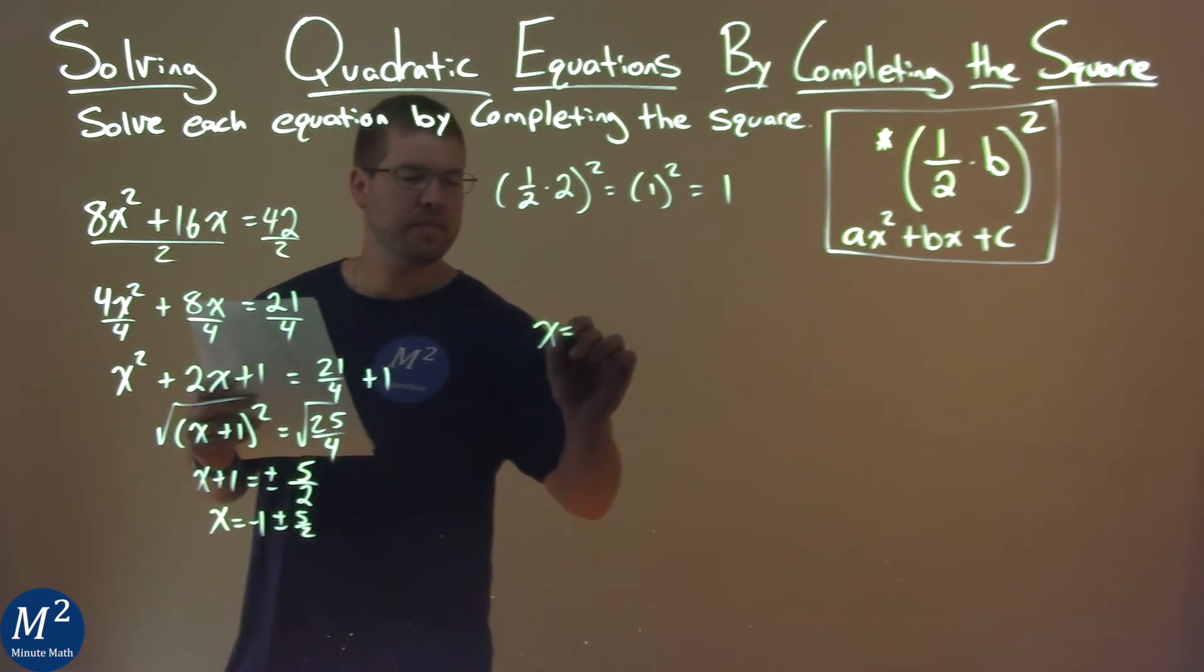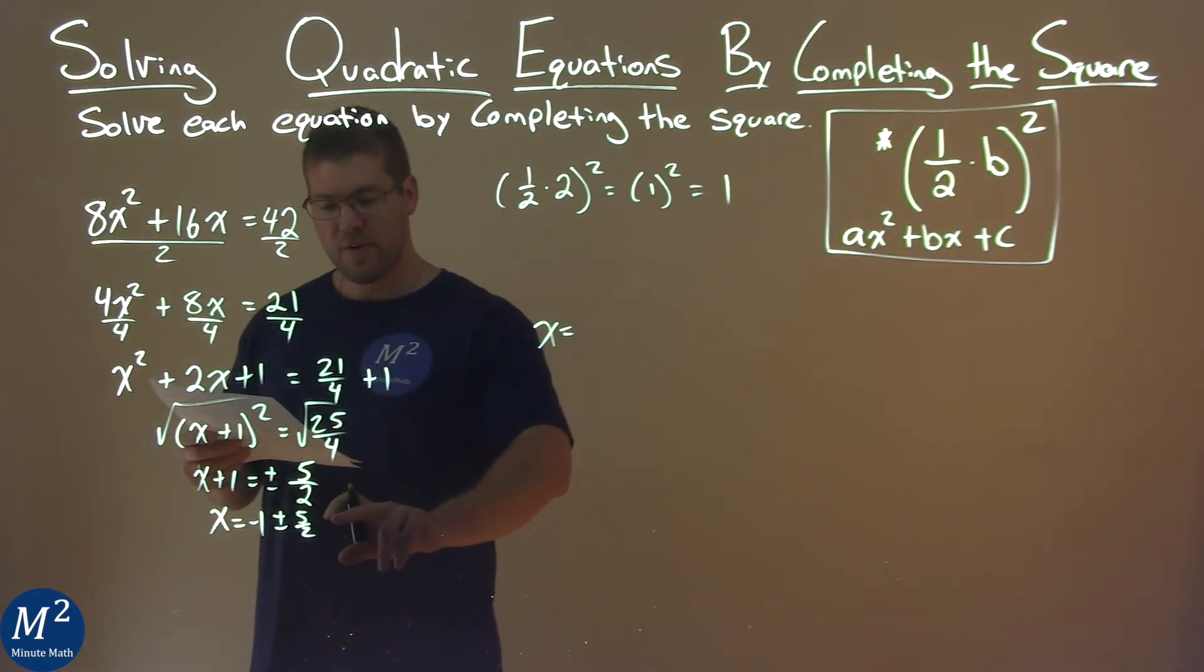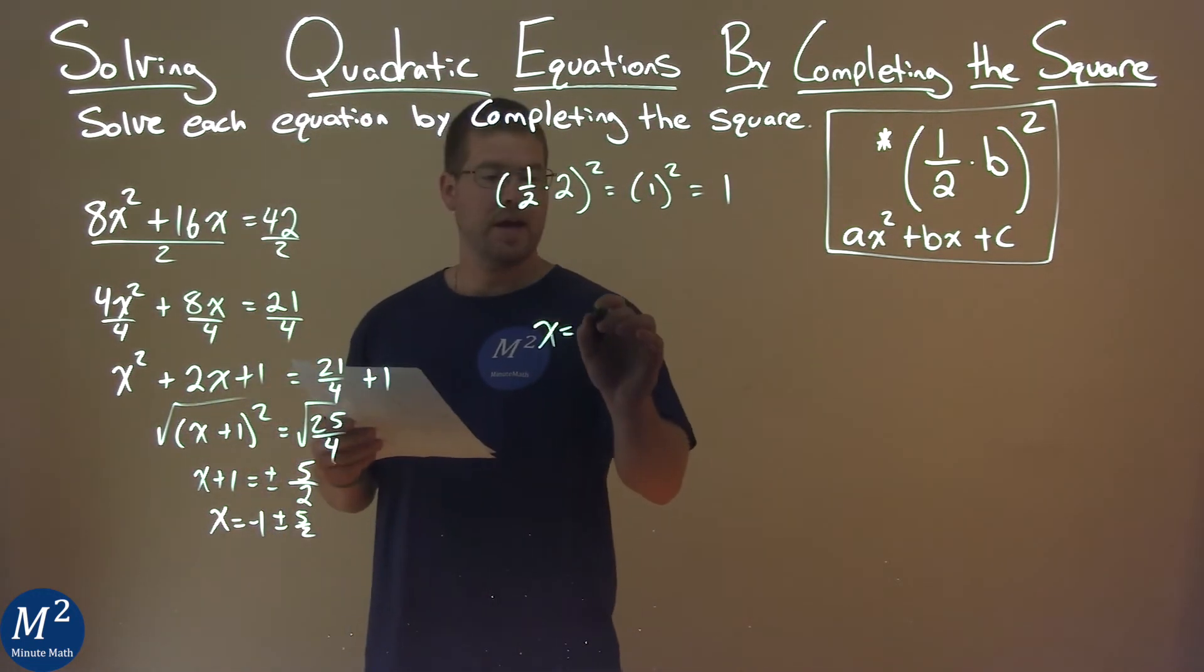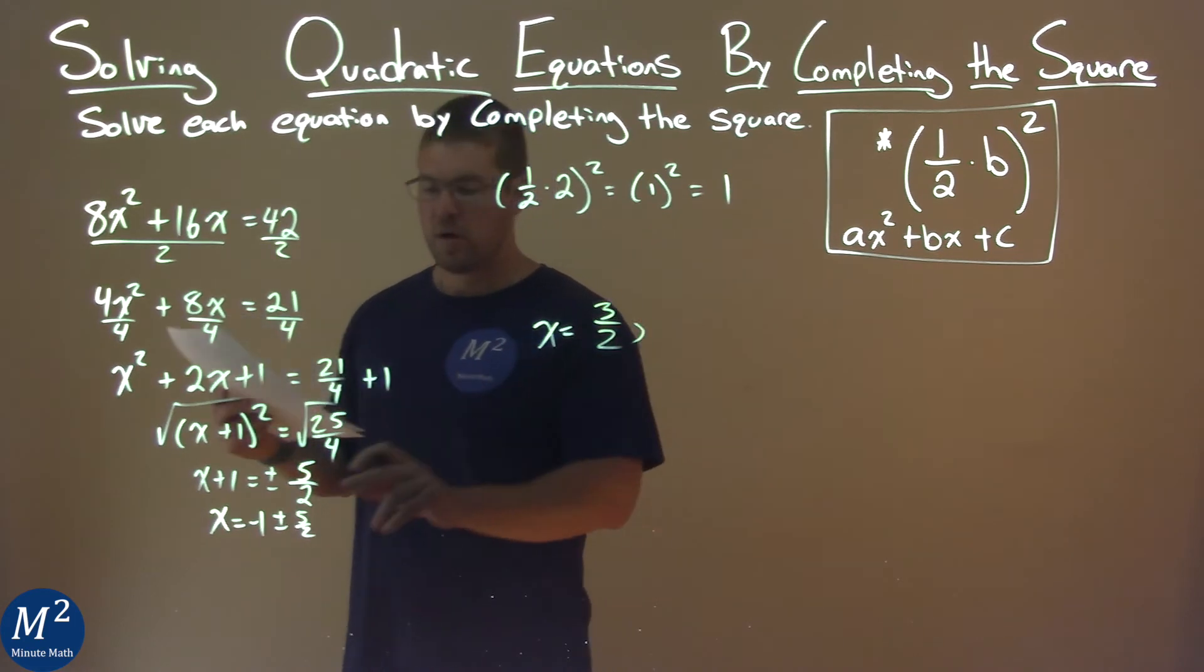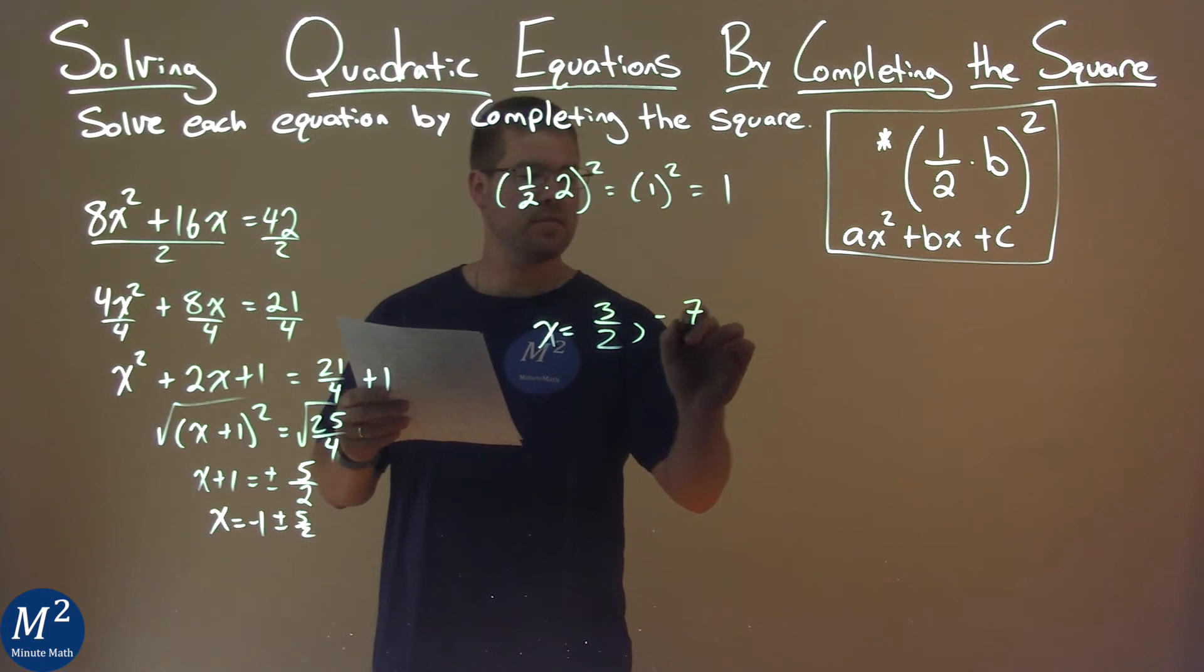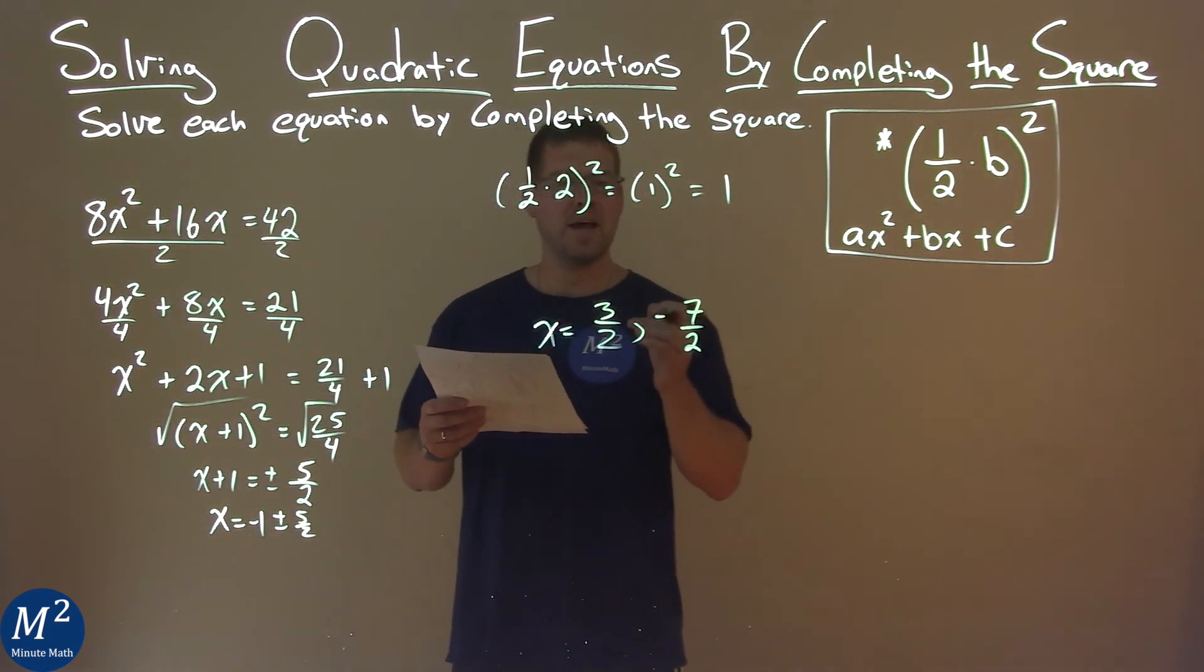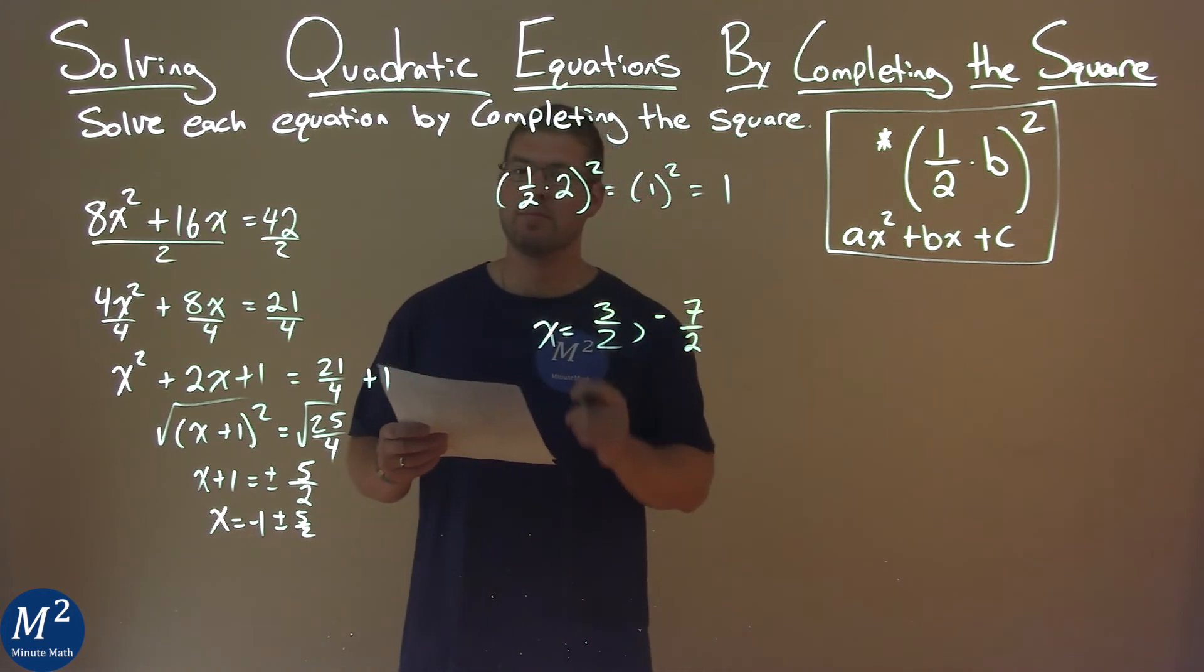And what does that come out to be? Let's deal with this first one. Negative 1 plus 5 halves is 3 halves. Negative 1 minus 5 halves is negative 7 halves. And so my two solutions are x equals 3 halves and negative 7 halves. That is my final answer.